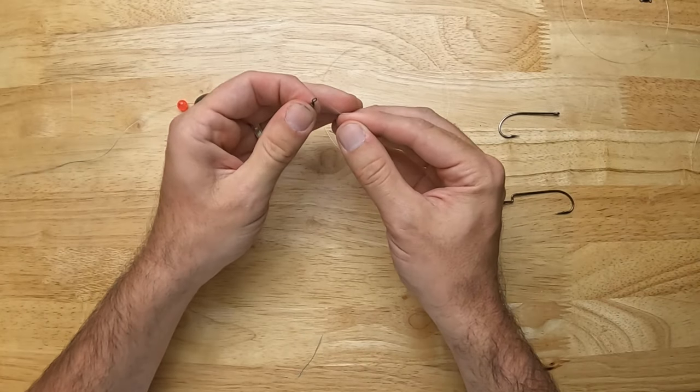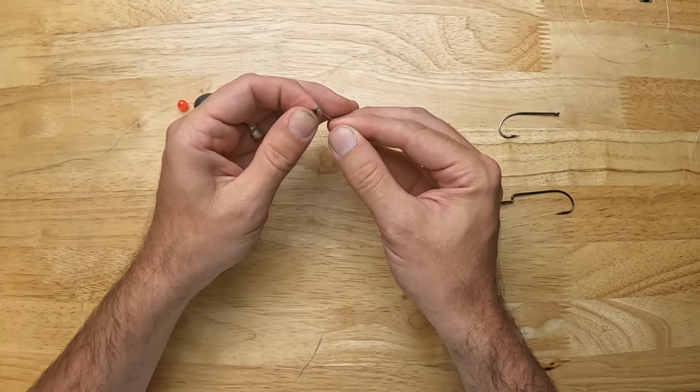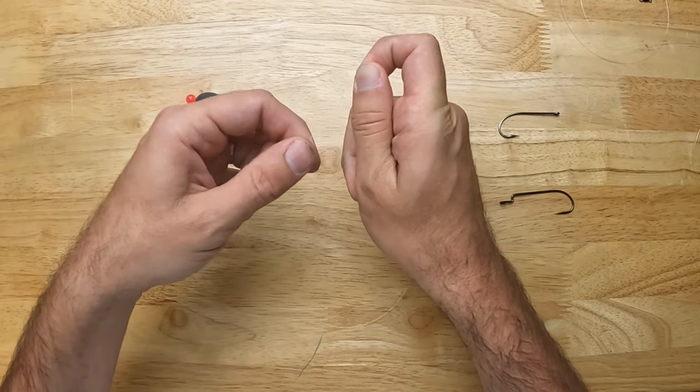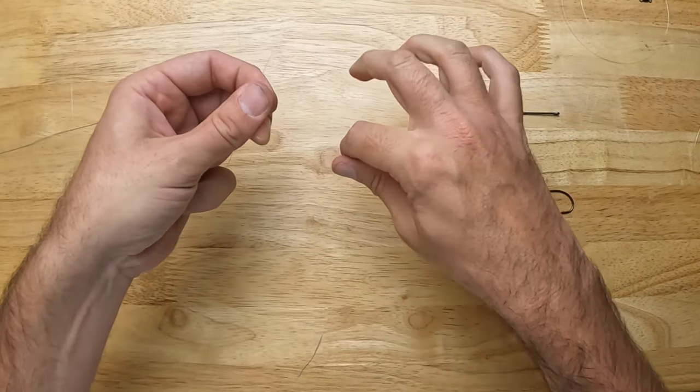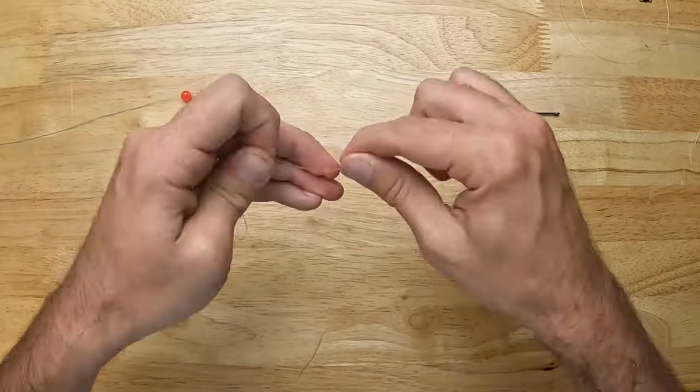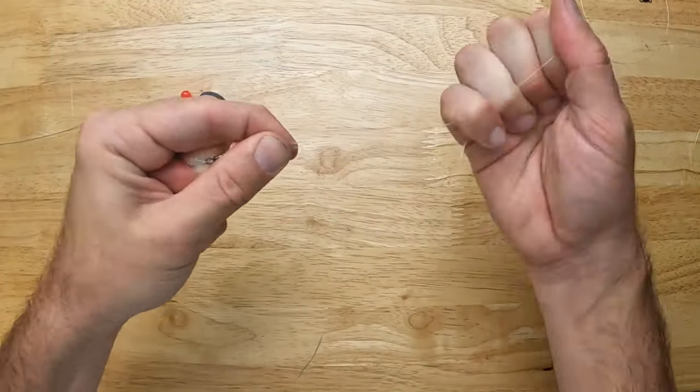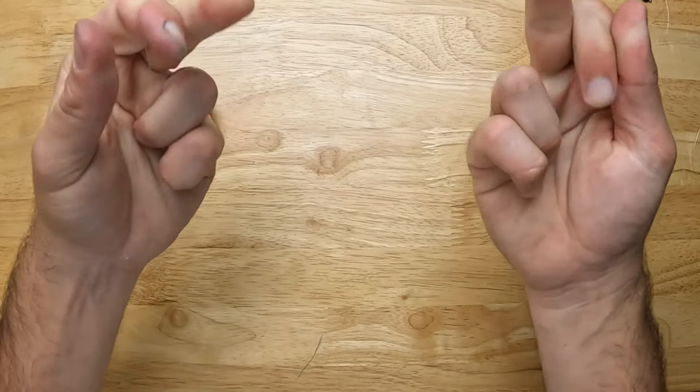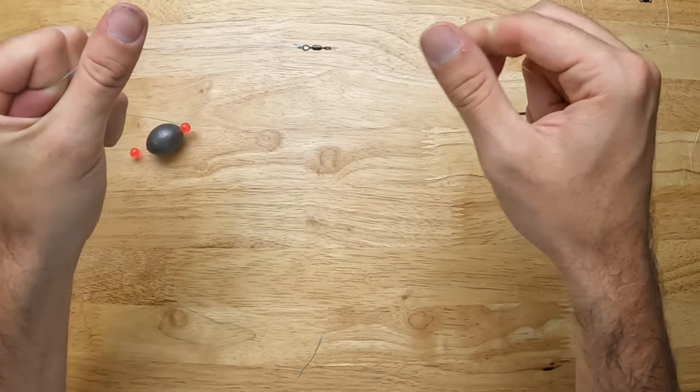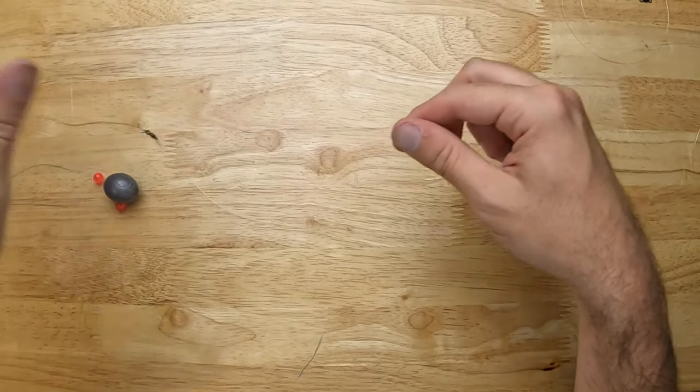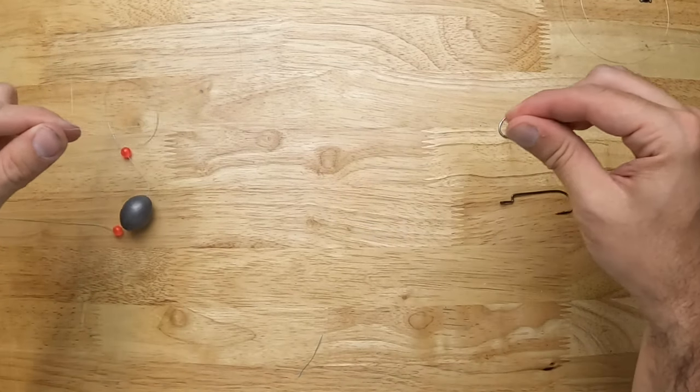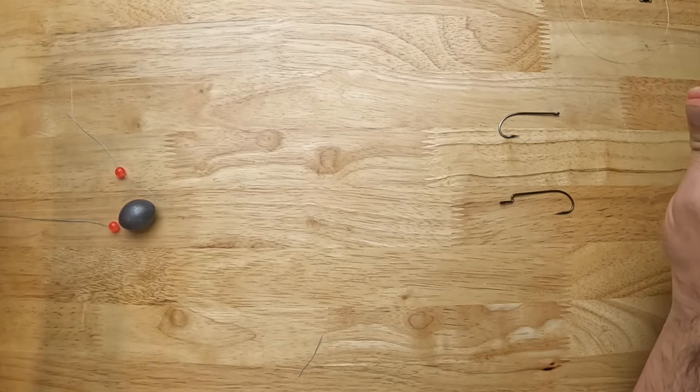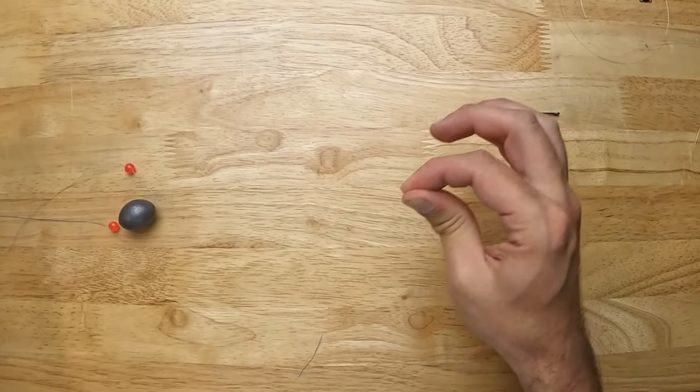From there I just attach my leader line to the other end of the barrel swivel, again using an improved clinch knot. There we have it. Now we've got our leader line attached to our swivel and we're ready for the good end.